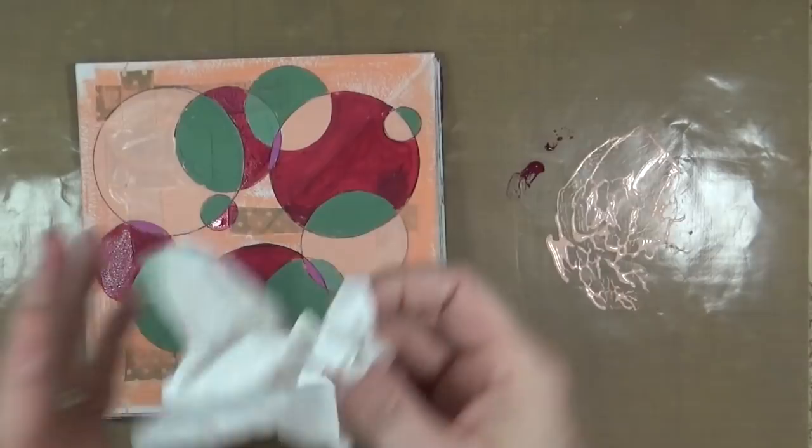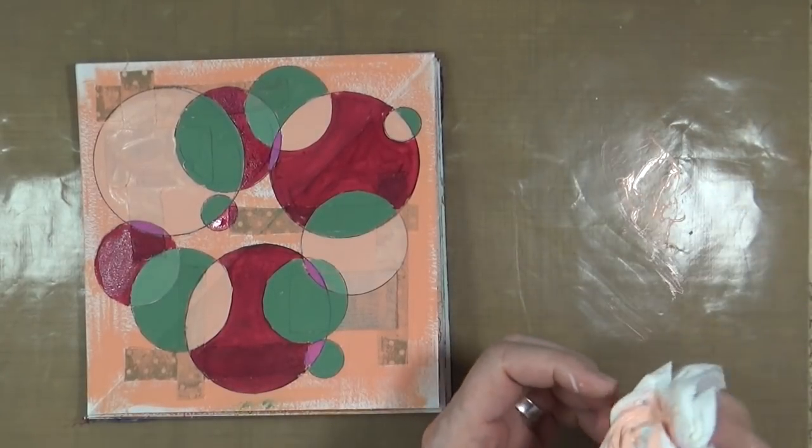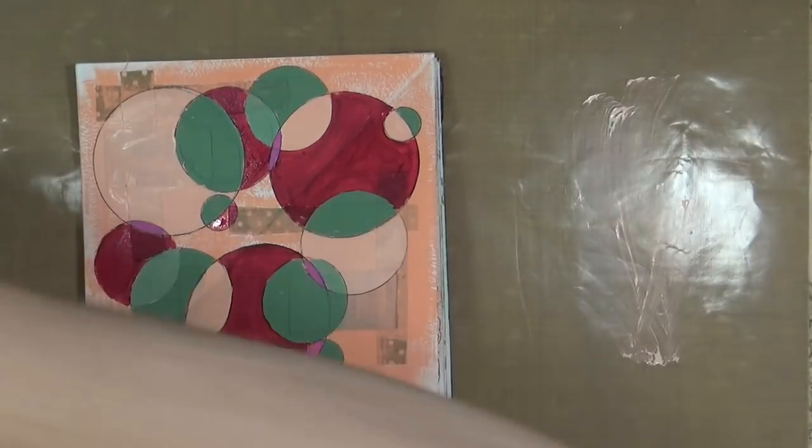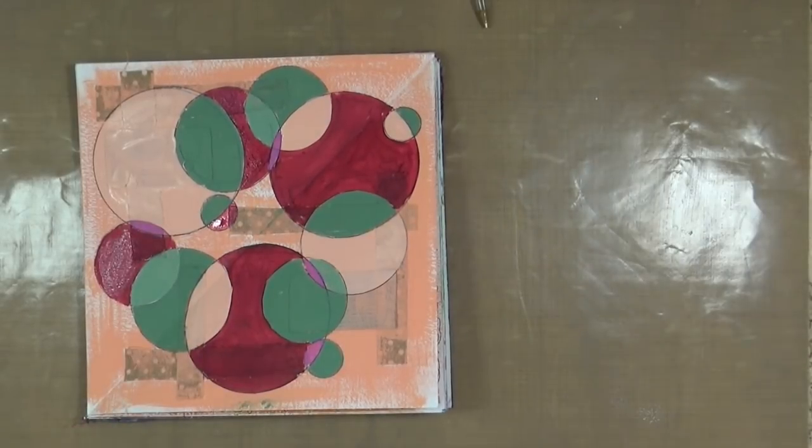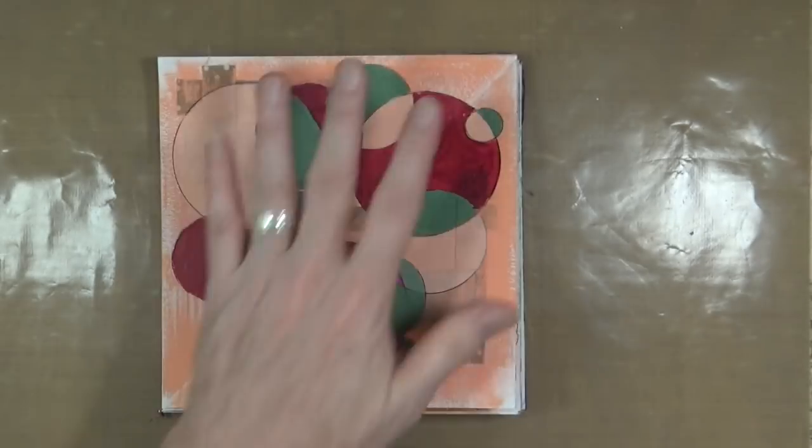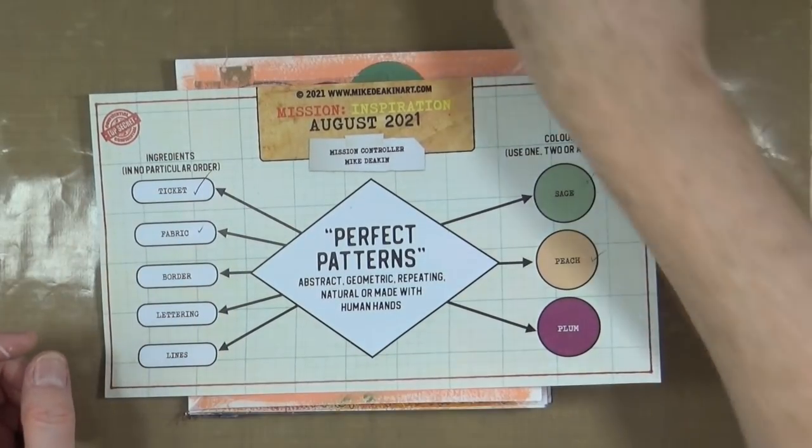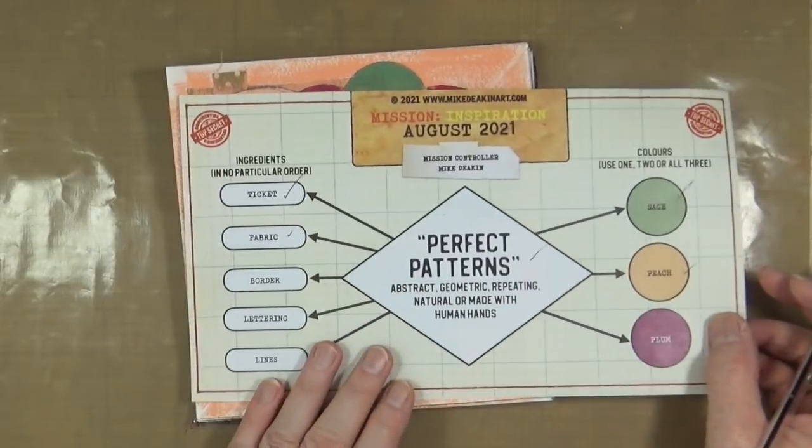That will do for now. Let me get that dried off and then we'll be back. That lot is now dry. Let's have a quick look at what we've got. We've got circular patterns there, so what we're left with is lettering, border, and lines.